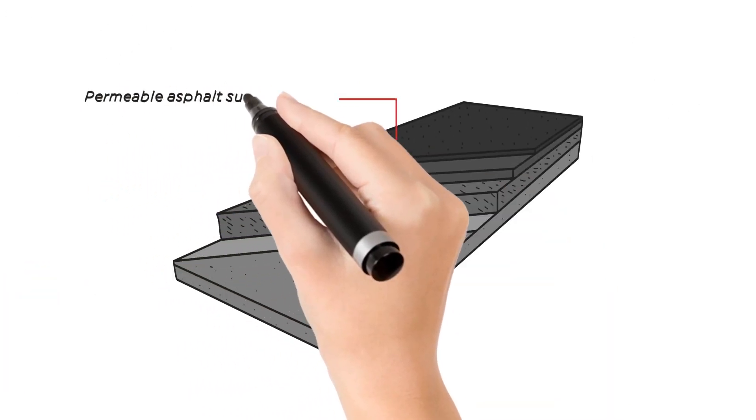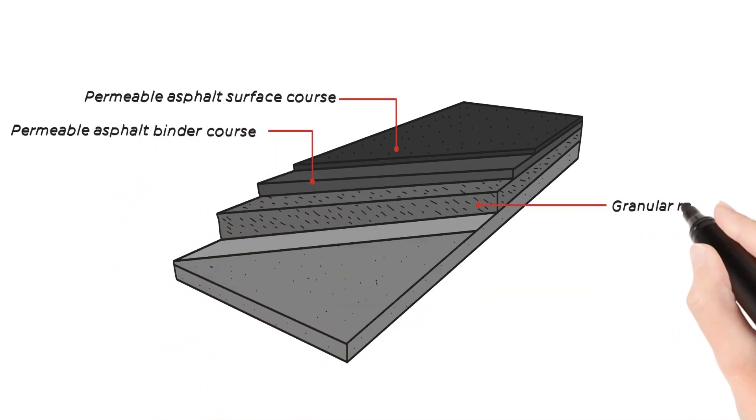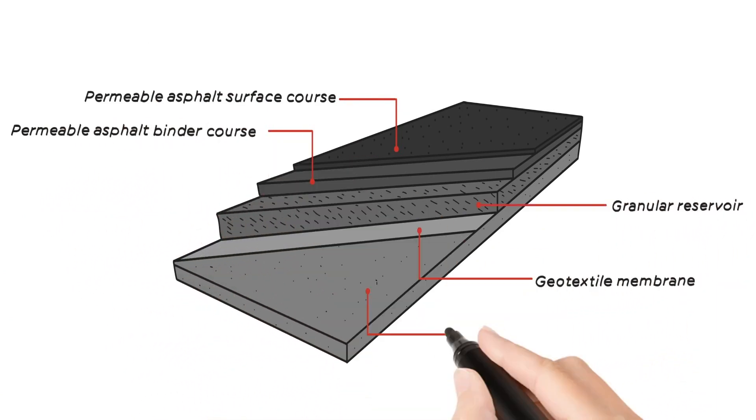A permeable asphalt system is a development of traditional asphalt pavements, consisting of four distinct layers: a surface course, binder course, granular reservoir, and geotextile or geomembrane.